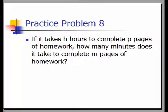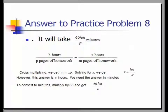Practice problem eight is a challenge problem: If it takes H hours to complete P pages of homework, how many minutes does it take to complete M pages of homework? The answer is 60HM over P minutes. Set up the proportion: H hours for P pages equals x hours for M pages. Cross multiplying gives HM equals xP. Dividing both sides by P gives x equals HM over P. However, this answer is in hours; to convert to minutes, multiply by 60, giving 60HM over P.